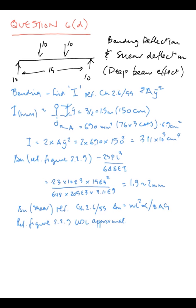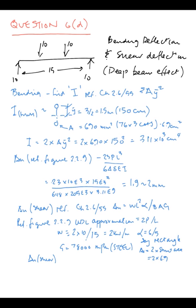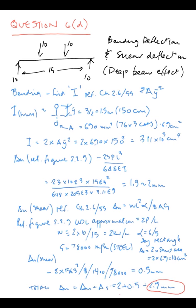For shear, the deflection is WL squared alpha over 8AG. If you look in chapter 2.6, page 55, and adding in the figures with the shear modulus and the shear area, we come out at 0.5 millimetres. So the total combined deflection of bending and shear is 2.5 millimetres.